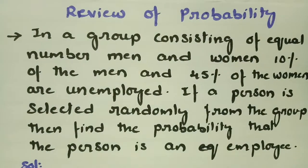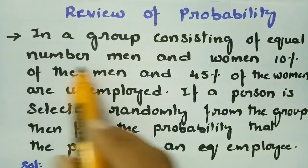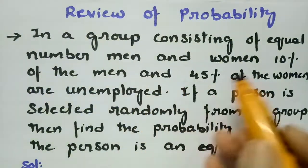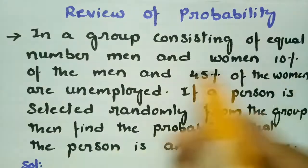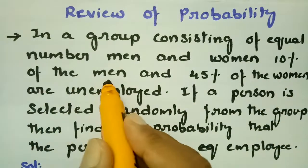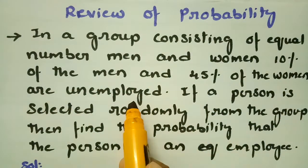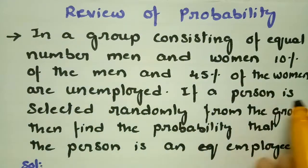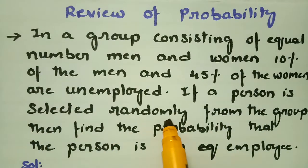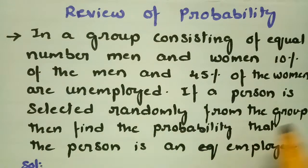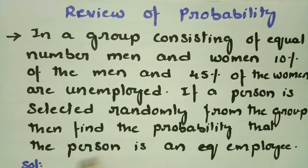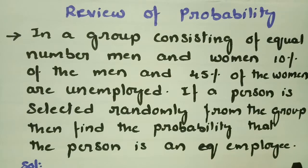This problem is from probability. In a group consisting of equal numbers of men and women, 10% of men and 45% of the women are unemployed. If a person is selected randomly from the group, then find the probability that the person is an employee.